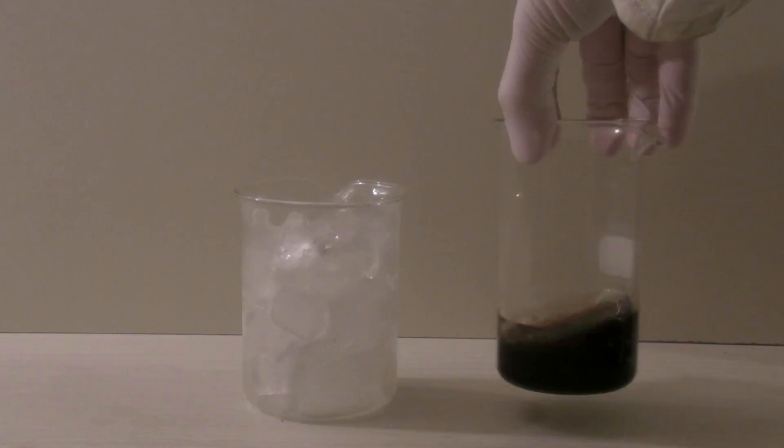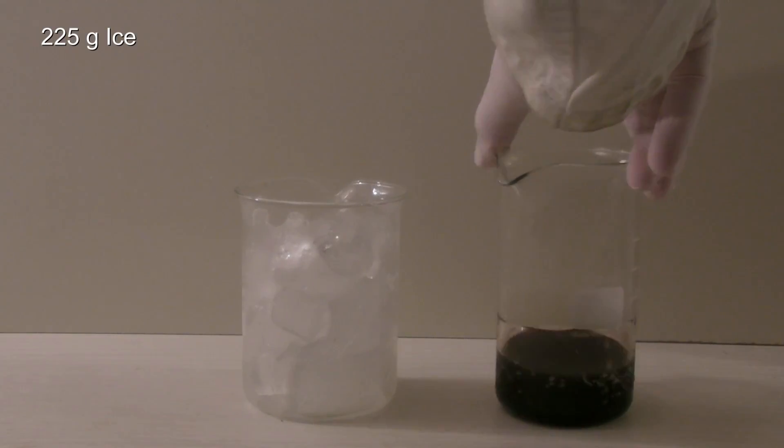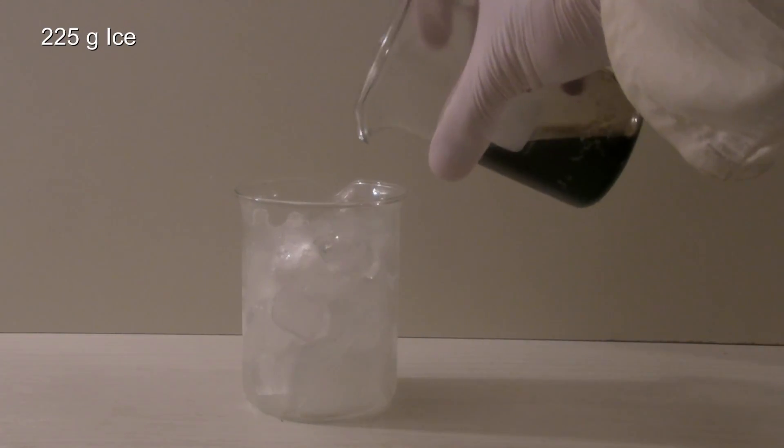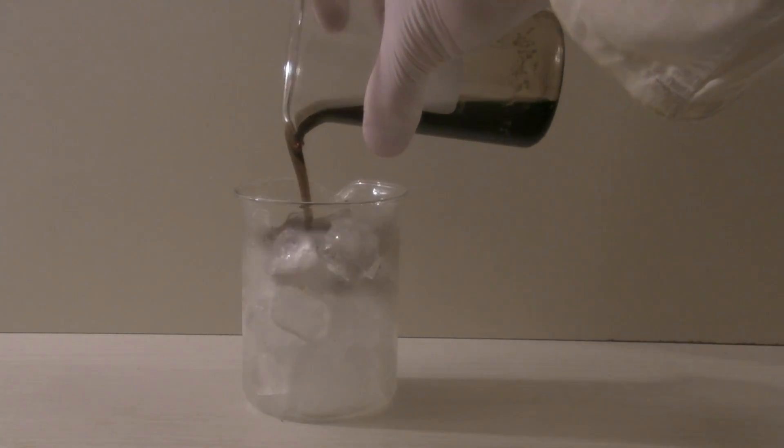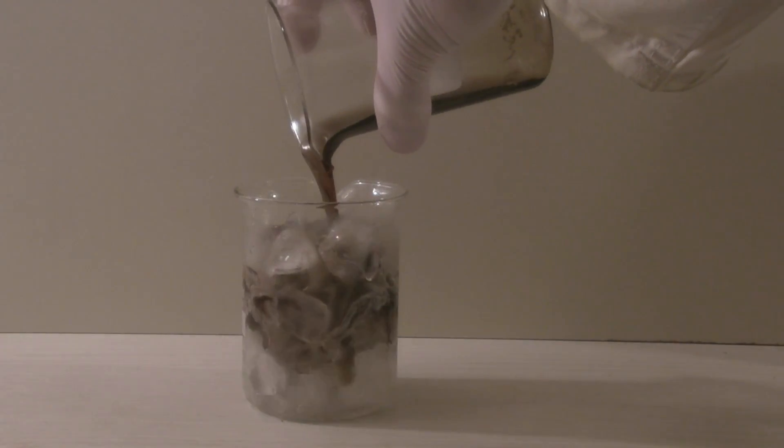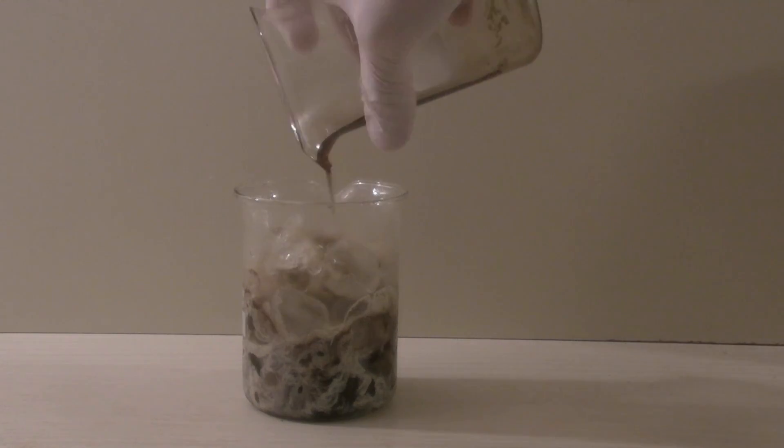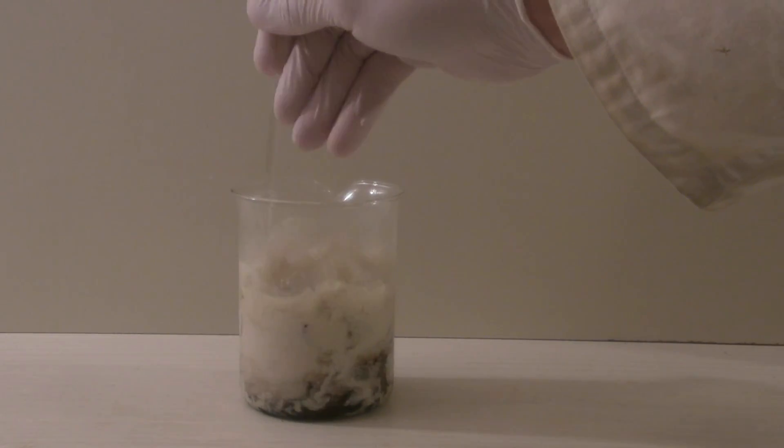When the mixture has reached room temperature it is added to a beaker with 225 grams of ice. This causes all of the dissolved compounds to precipitate and prevents it from heating up due to the mixing of the acid with water. I used ice cubes but crushed ice would be more suitable as it would melt faster. It is then mixed and left to sit until the ice has molten.